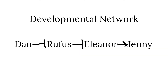In addition to Dan acting as a repressor, Rufus also acts as a repressor to Eleanor. Eleanor is an activator to Jenny. When all of the characters are wild type, as shown here, Dan represses Rufus, who would have repressed Eleanor. Since Rufus is unable to repress Eleanor, Jenny is transcribed.